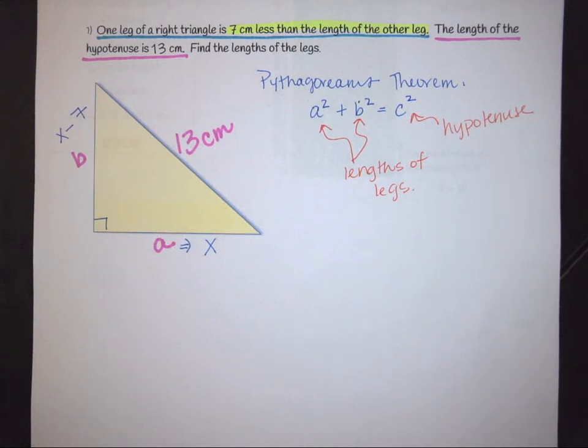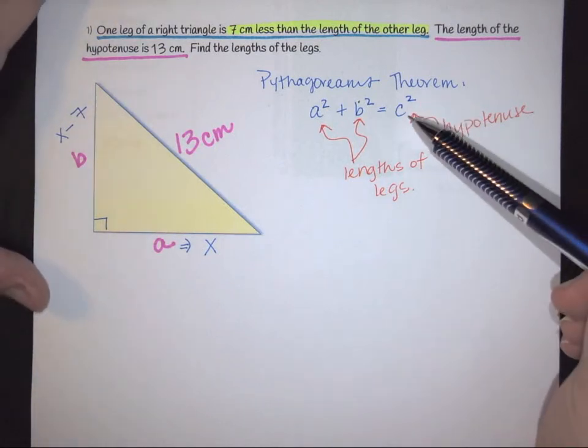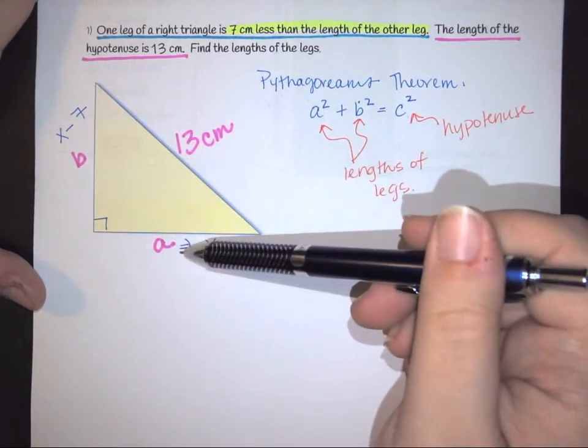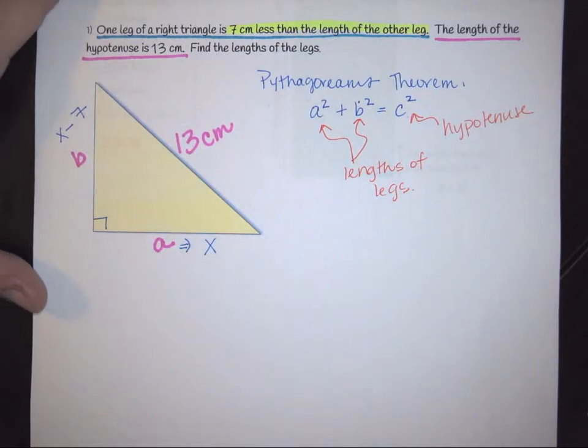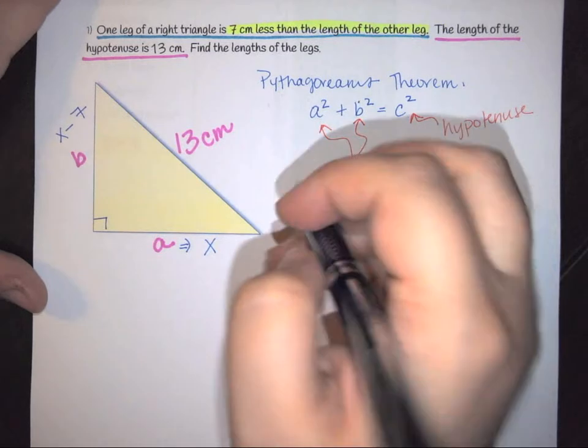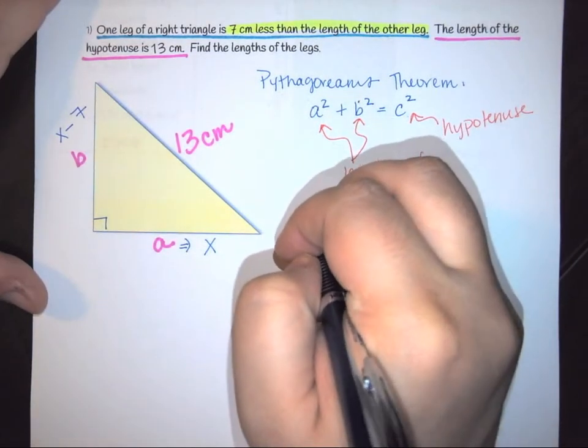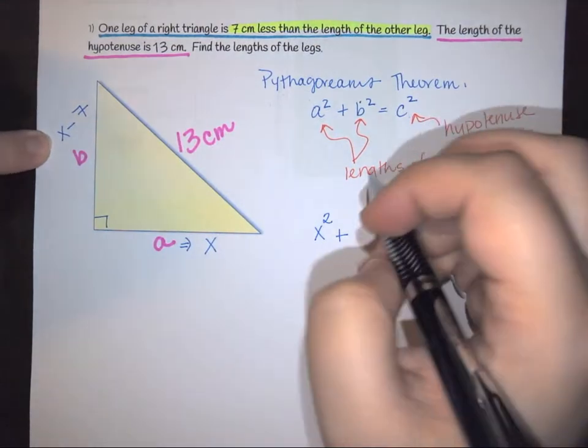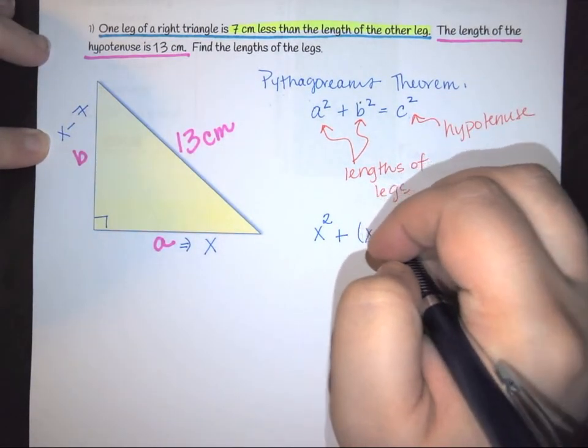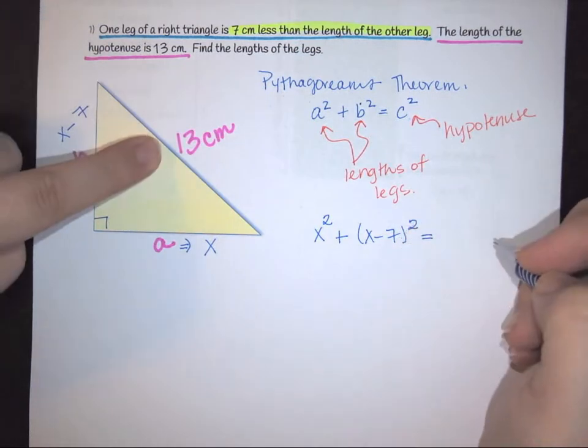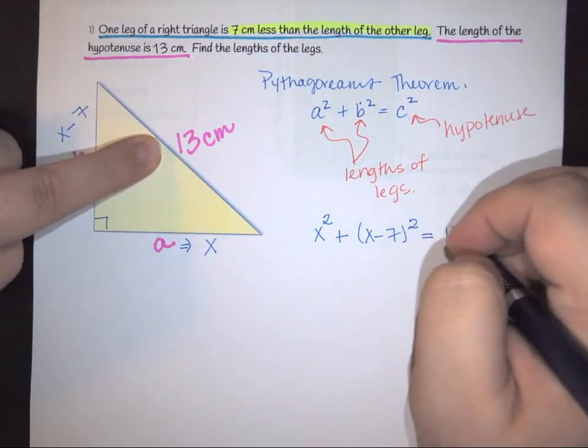Once you've input all of your stuff, you have to plug it into Pythagorean's theorem in order to solve for your lengths. Because remember, we don't know these two lengths here. We have to find them. So I have a and b. So I need to do x squared plus my b is really x minus seven. So this becomes x minus seven squared equals c was 13, so 13 squared.